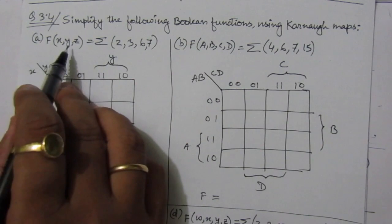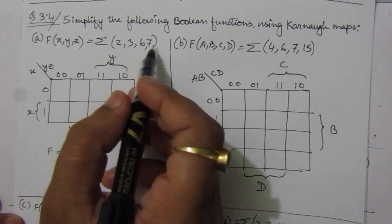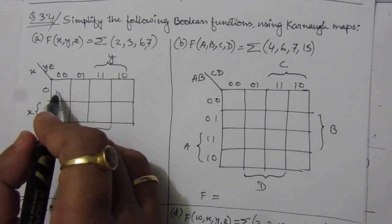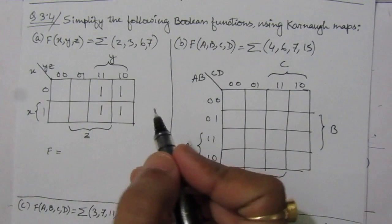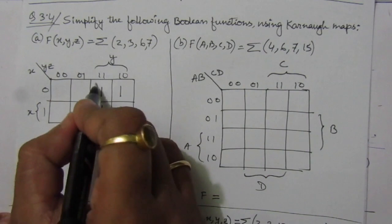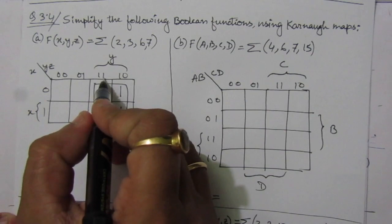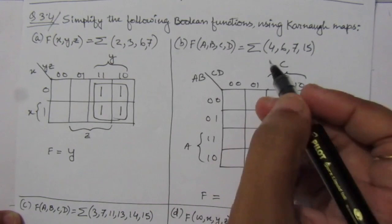The first problem is F of x, y, z — three input variables. The K-map is set up and the sum of minterms expression is {2, 3, 6, 7}, so we place ones for those positions. Combining all four ones together, we can see that x is both zero and one (cancelled), z is both one and zero (discarded), and we are left with only y. So the simplified boolean expression is F = y.